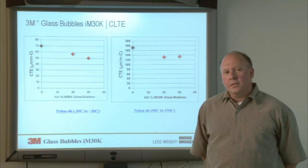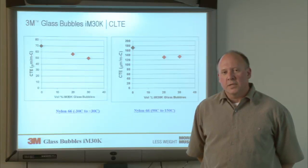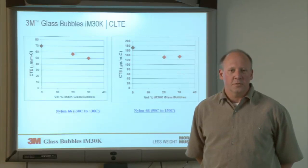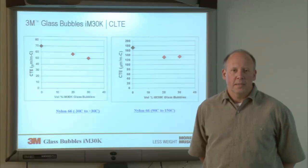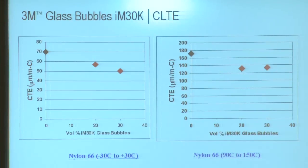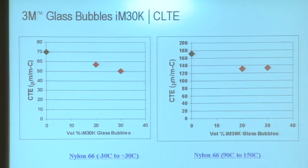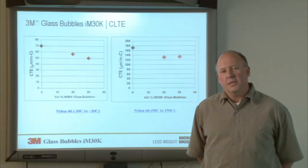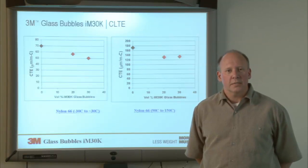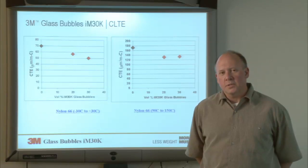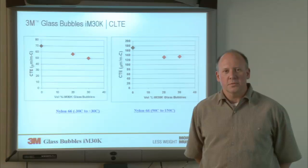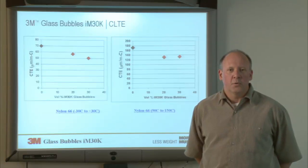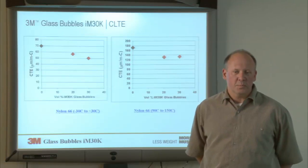The second property improved with the addition of glass microspheres is CLTE, or Coefficient of Linear Thermal Expansion. Here we're showing the property for nylon above and below its glass transition temperature. CLTE is the expansion and contraction of plastic or other materials as they're heated and cooled. Because glass does not expand and contract as much as plastic resin materials do, the more volume percent of glass bubbles you add, the more you'll reduce the CLTE and improve this property.